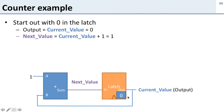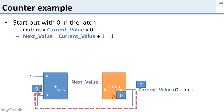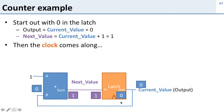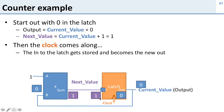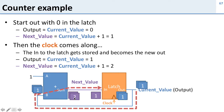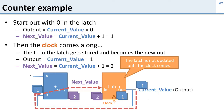Let's walk through the counter. If the latch output is 0, the current value is 0. That goes to the adder with input 1, giving a next value of 1 — but the current value hasn't changed yet; we must wait for the clock. When the clock arrives, the input (1) moves to the output, so the current value becomes 1. Then 1 goes into the adder, 1 plus 1 gives 2 as the next value, and the cycle repeats. The latch only updates when the clock comes.